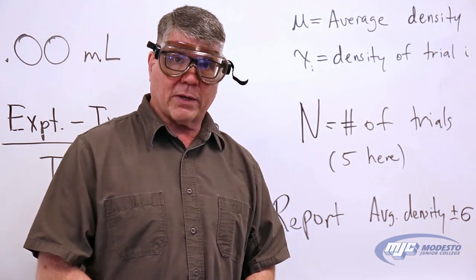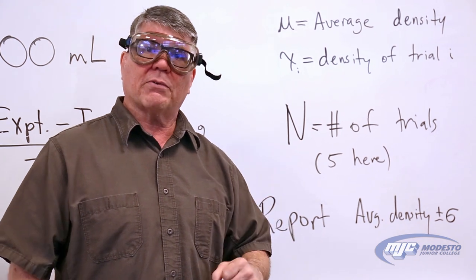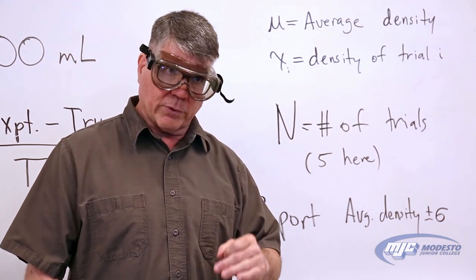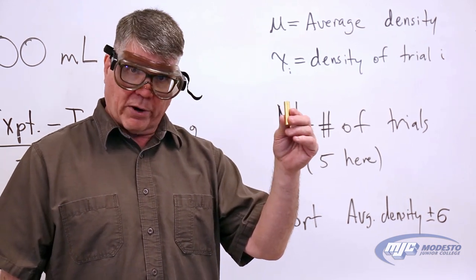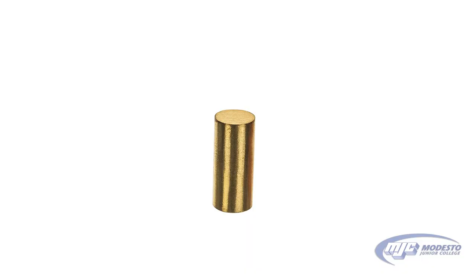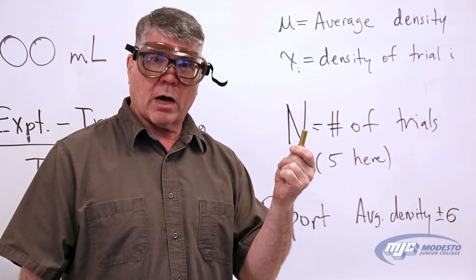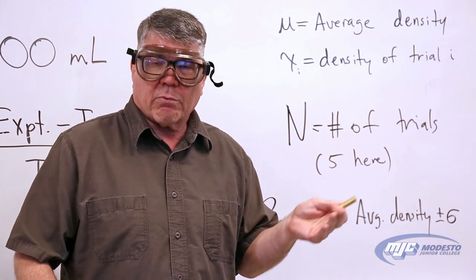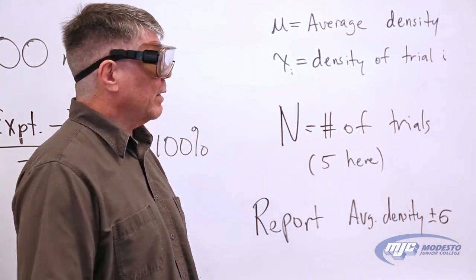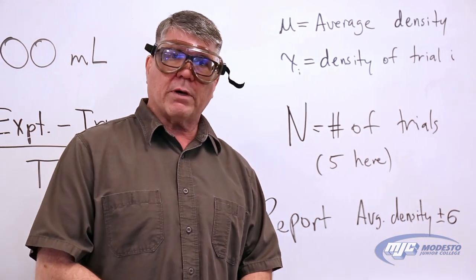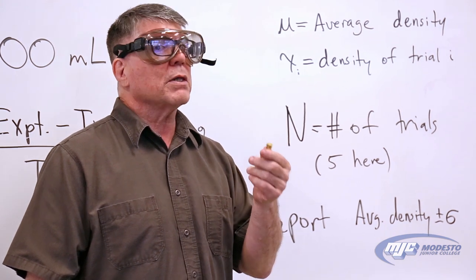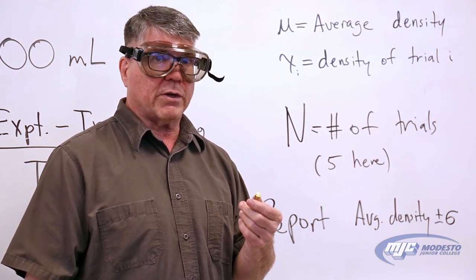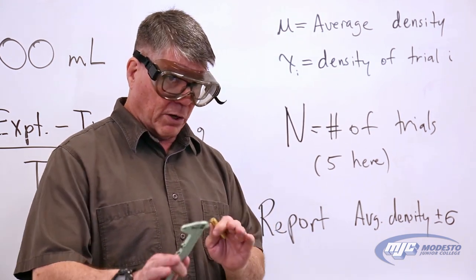For the second part of the experiment, you're going to take some measurements that will allow you to determine the composition of the brass that makes up a cylinder. Brass is made up usually of copper and zinc. You're going to determine what percent of this brass is copper and what percent is zinc. Different kinds of brass have different compositions. The way you're going to do that is by measuring the density of your cylinder, and knowing the density of pure copper and pure zinc, you're able to calculate the composition.